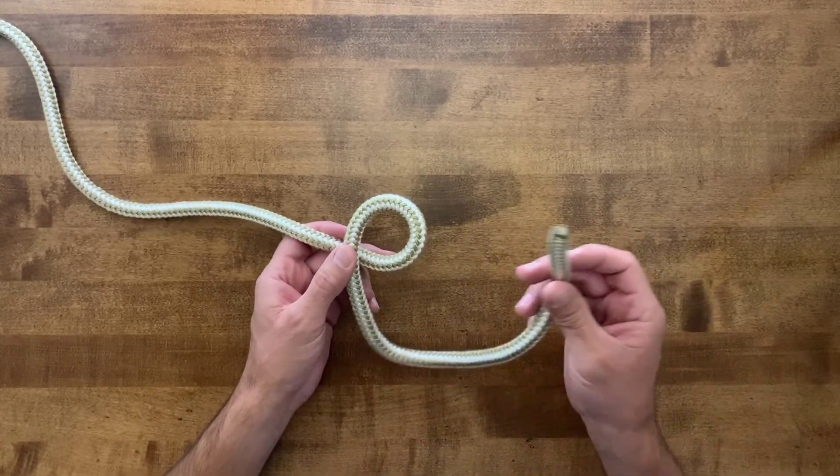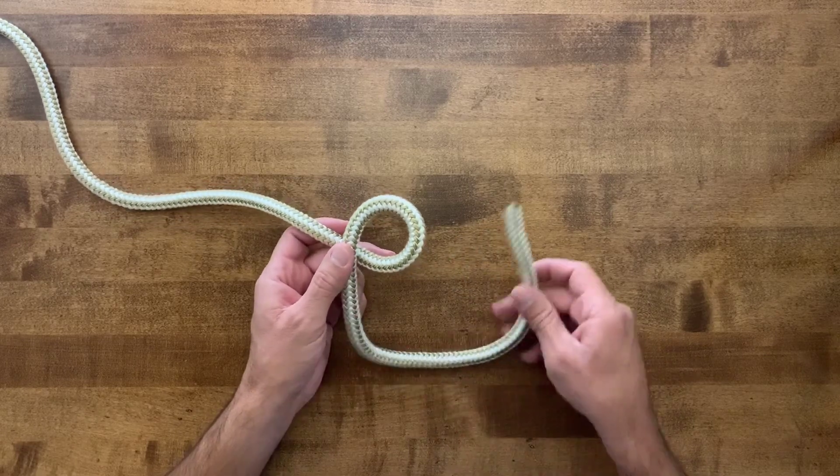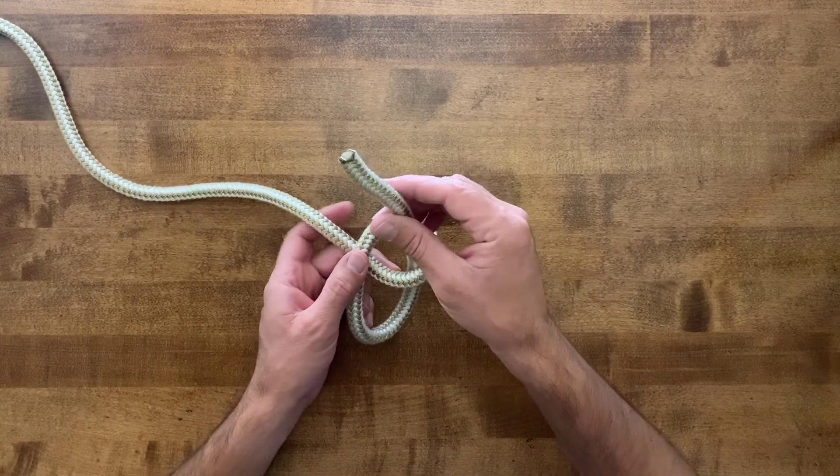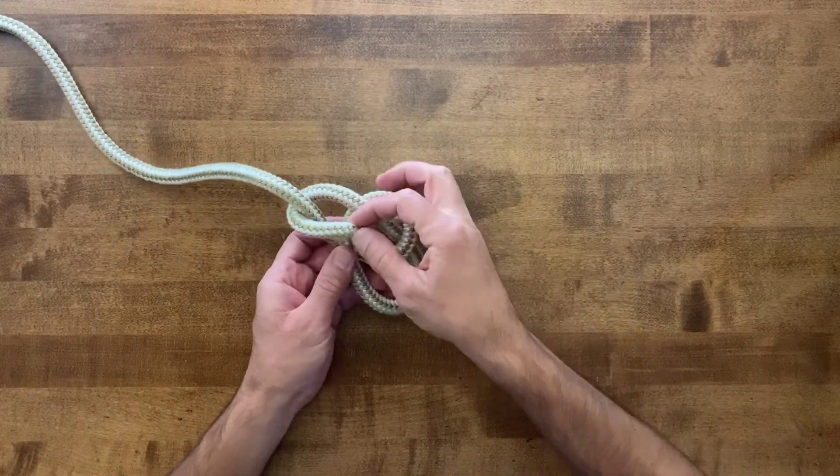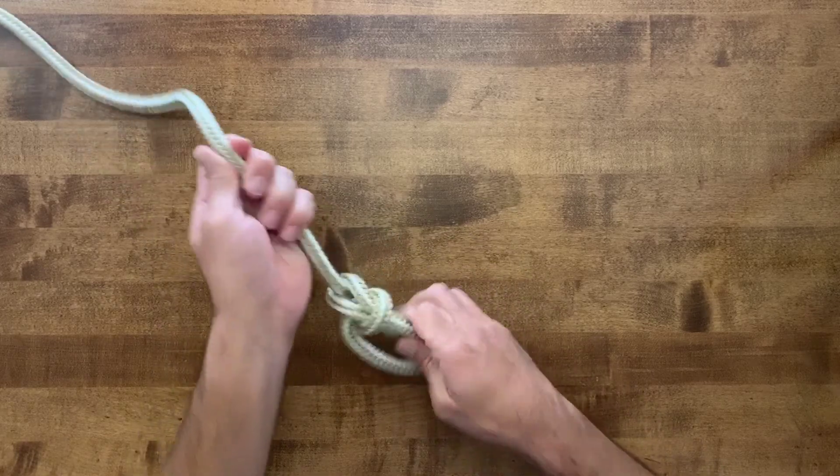The tag end is the rabbit. You twist it two, and the rabbit then comes out of his hole. He goes around the tree, and then goes back down into his hole. There's your bowline knot.